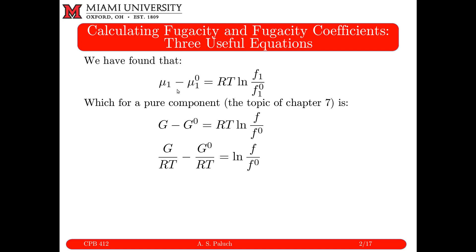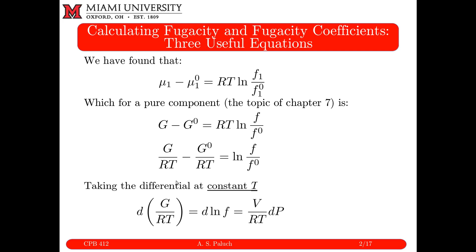For a pure component system, chemical potential and molar Gibbs free energy are one and the same. So I could equivalently write this as the difference in molar Gibbs free energies. Since this is at constant T, I could equivalently divide through by RT and express it in terms of dimensionless molar Gibbs free energies. This is derived for an isothermal process.